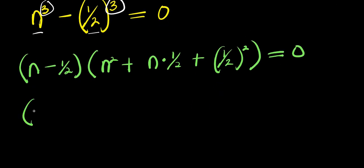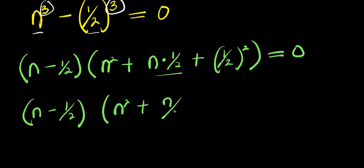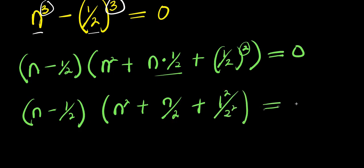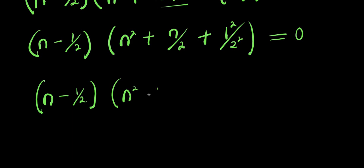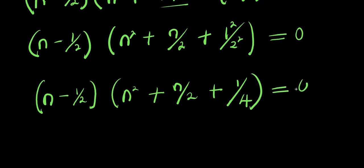So right now I will have (n minus 1/2) times (n² plus n/2 plus 1/4) equals 0. Distributing, I have n minus 1/2, and this becomes n² plus n divided by 2, plus 1 over 2 squared, that is 1 divided by 4, and this equals 0.